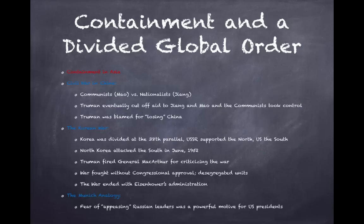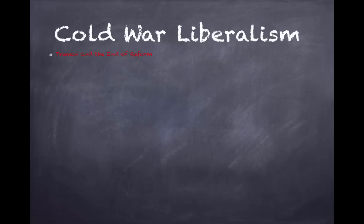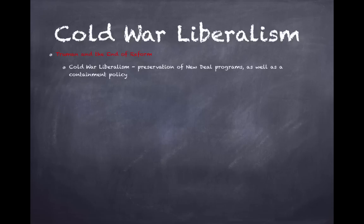The Munich analogy was a powerful motive for US presidents — many feared that appeasing Soviet leaders would be like appeasing Hitler at Munich. Cold War liberalism combined the preservation of New Deal programs with a strong containment policy, and it became a popular approach during this era.